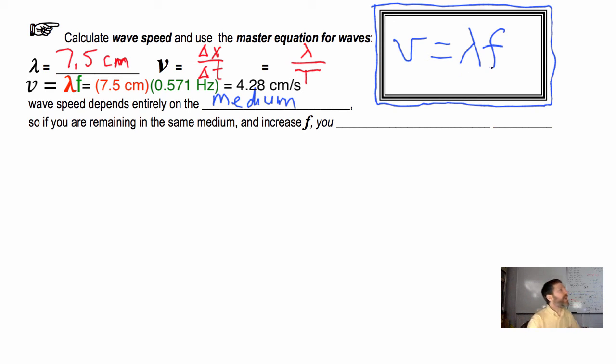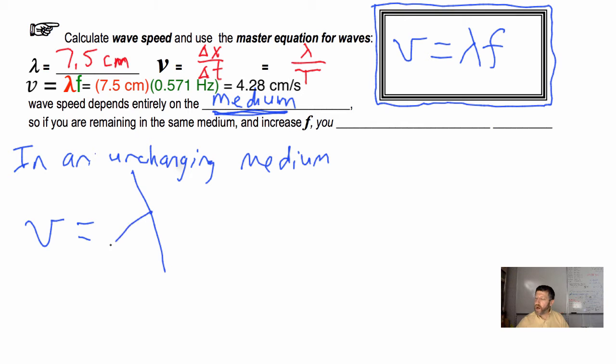You cannot change the wave speed by changing the frequency. And proof of that is, if I talk with a high voice, is the waves getting to you faster or slower or neither? Neither. It would be horrible if you heard the high notes of a band playing before you heard the low notes, concerts would sound horrible. Luckily, all the frequencies travel at the same speed. In an unchanging medium, what would happen if, so here V that's got to remain constant. What would happen if I made the wavelength really long? That's a super big wavelength. What would happen to the frequency? It would have to be a very low frequency.